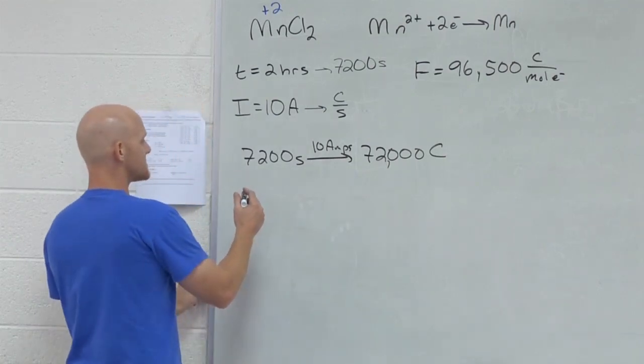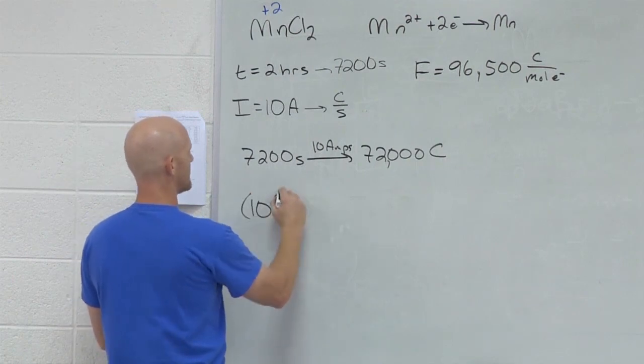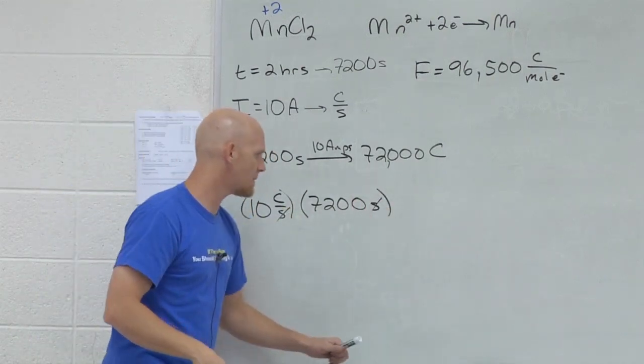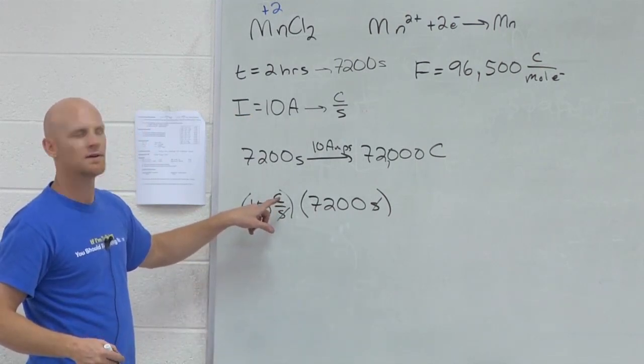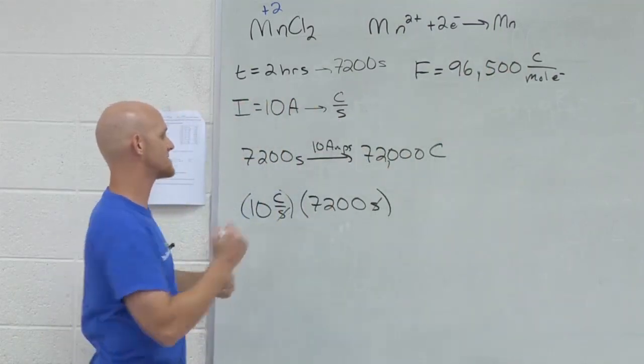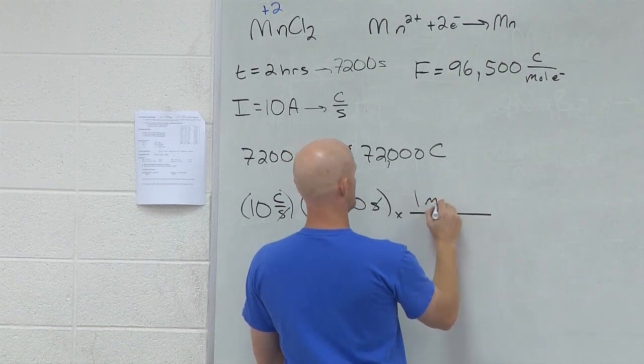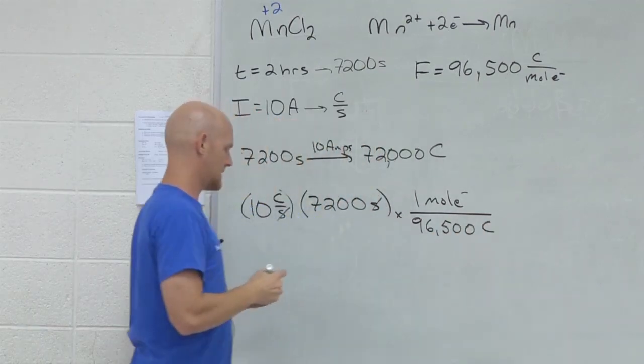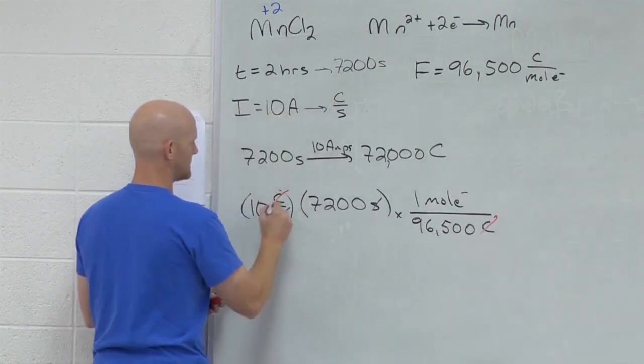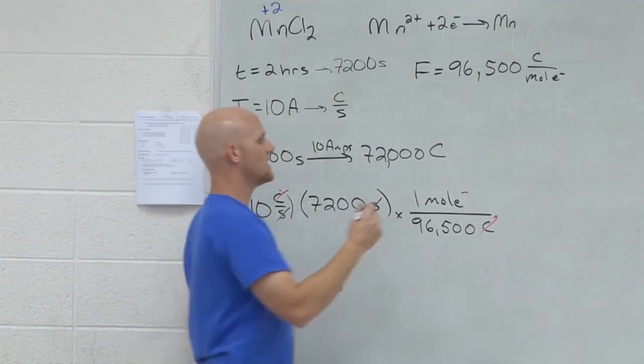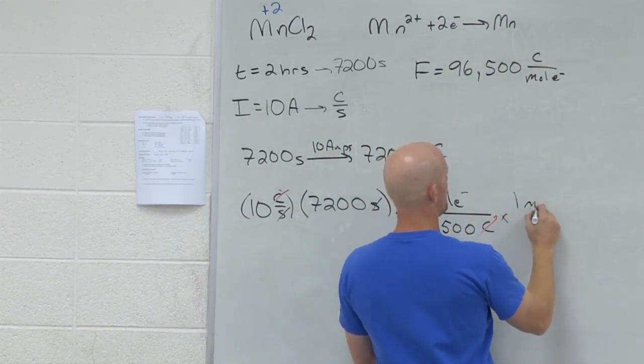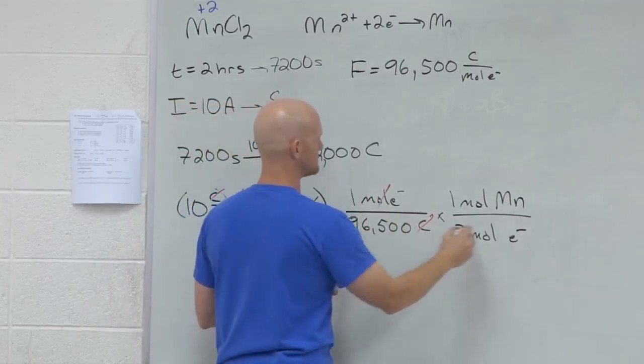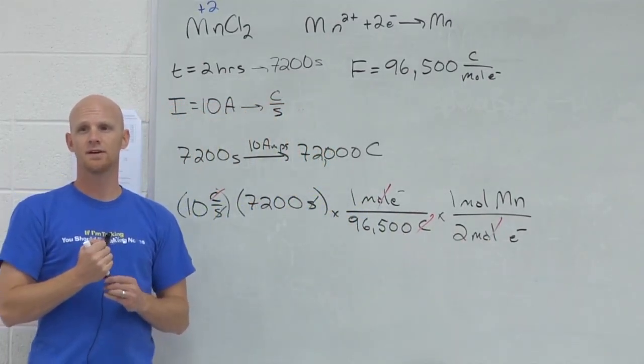That's the basis of our calculation. The way this really works out, you start with your amps, that's 10 coulombs per second, multiply by the seconds, that's 7,200 seconds. But once you've got the coulombs, you've got to use Faraday's constant to relate that to how many moles of electrons that actually is. One mole of electrons is 96,500 coulombs. Now that you've got the moles of electrons, you know from the half reaction that you can get one mole of manganese for every two moles of electrons. That's the calculation. Moles of manganese.